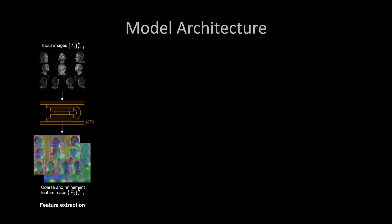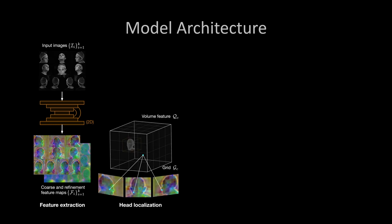TEMPER predicts high-quality head meshes in two stages: a core stage, which outputs an intermediate 3D head, followed by a refinement stage that updates all vertex locations and outputs the final mesh. First, each input image is processed by a shared network to extract 2D feature maps. These feature maps are then unprojected and fused into a feature cube.